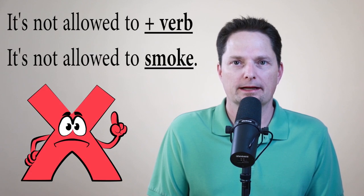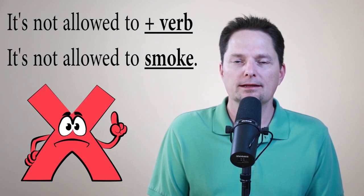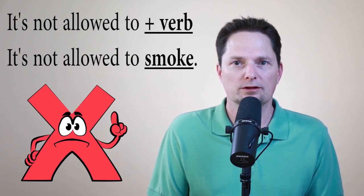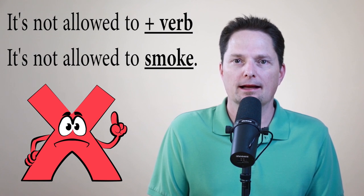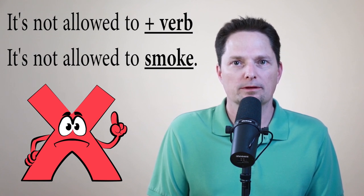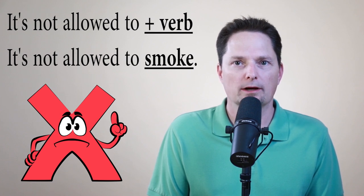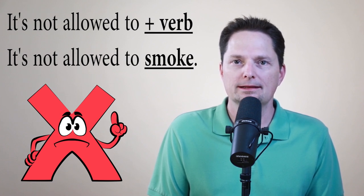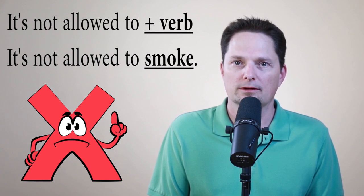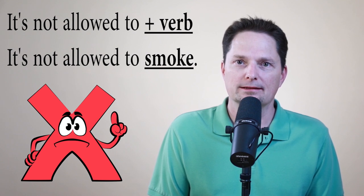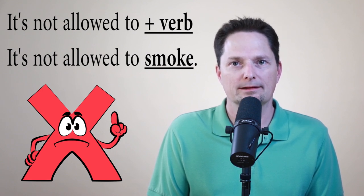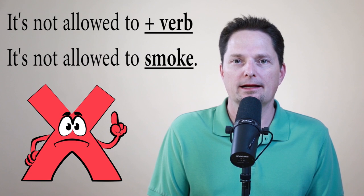Today we're learning to avoid this mistake. You cannot say 'it's not allowed to' plus a verb. For example, 'It's not allowed to smoke in the building' is not correct, because 'it' is a pronoun referring to the thing you're not allowed to do — I cannot use 'it' plus a verb at the end.